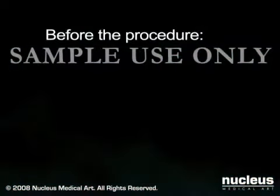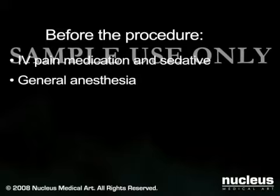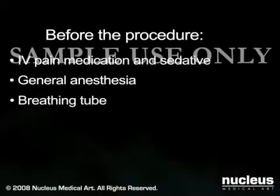When you arrive at the hospital for your procedure, an intravenous line will be started and you may be given a sedative to help you relax. Most cases are done under general anesthesia, which will put you to sleep for the duration of the operation. A breathing tube will be temporarily inserted through your mouth and into your throat to help you breathe during the operation. Tonsillectomies and adenoidectomies are rarely done under local anesthesia in adults and never in children.